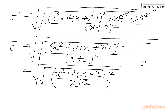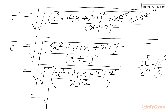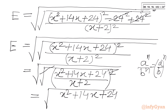As we all know, we can write a to the power n over b to the power n as a over b whole to the power n using exponent laws. Now you can see the square root and the square will cancel out, and we write our expression e equal to square root of x squared plus 14x plus 24 over x plus 2.